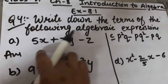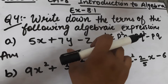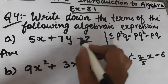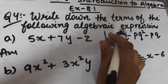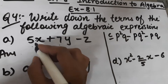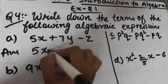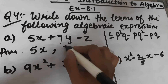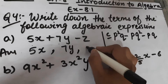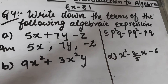In part (a), the parts of the expression are 5x, 7y, and minus z. So the terms of this expression are: first term is 5x, second term is 7y, and third term is minus z.